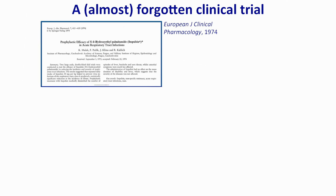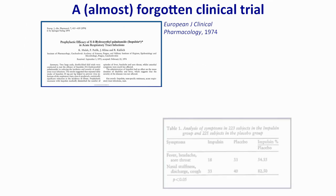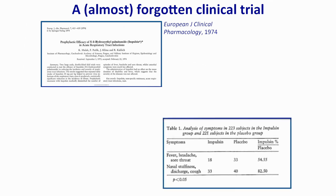This is the original paper published in 1974 in the European Journal of Clinical Pharmacology. What they discovered was really interesting. Impulsin was, as a result of these studies, put on the market as an anti-influenza drug. They found it was really effective at reducing certain symptoms like fever, headache, and sore throat — much more so than others, which were more allergic symptoms like nasal stuffiness, discharge, and cough.